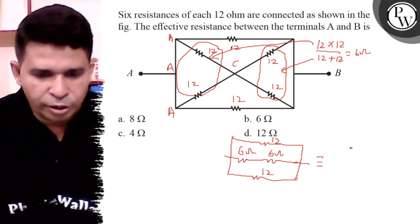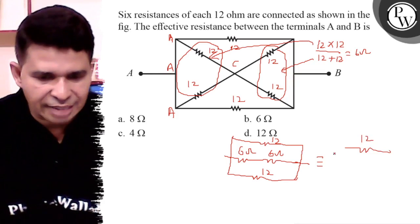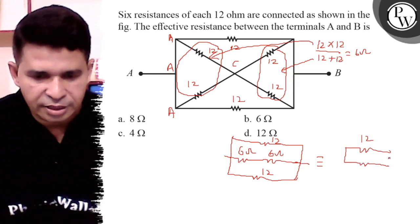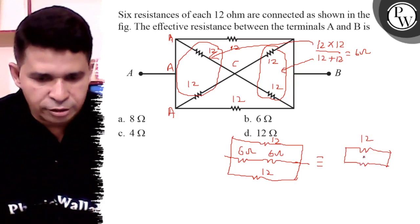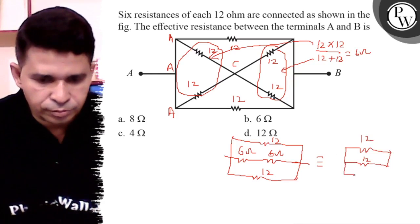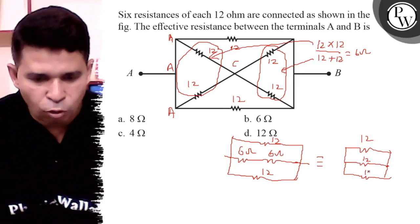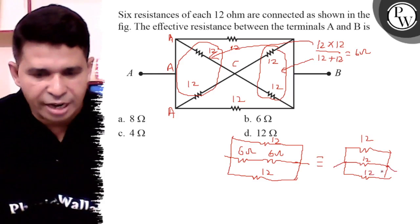So 12 ohm, 6 plus 6 is also 12 ohm, and lower 12 ohm - all three 12 ohm resistances are in parallel.